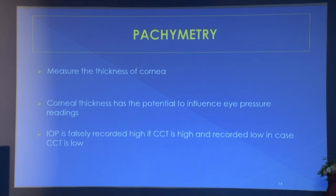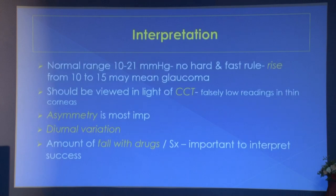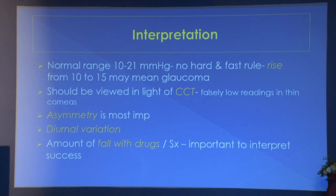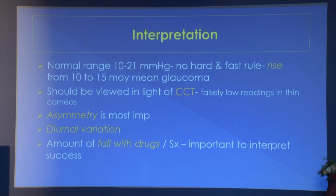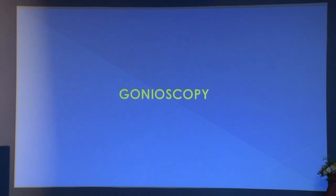Pachymetry is now an essential part of the IOP workup - it measures corneal thickness, which has the potential to influence eye pressure. The normal IOP range is considered 10 to 20, but it is not a hard and fast rule; a rise from 10 to 15 may mean glaucoma. IOP should be viewed in the light of central corneal thickness. Asymmetry is most important, and diurnal variation should not be given the back seat. Many patients diagnosed as normal tension glaucoma will be re-diagnosed as primary open angle glaucoma if diurnal variation is assessed. We must also assess the fall of IOP with drugs, as this is the only modifiable risk factor.